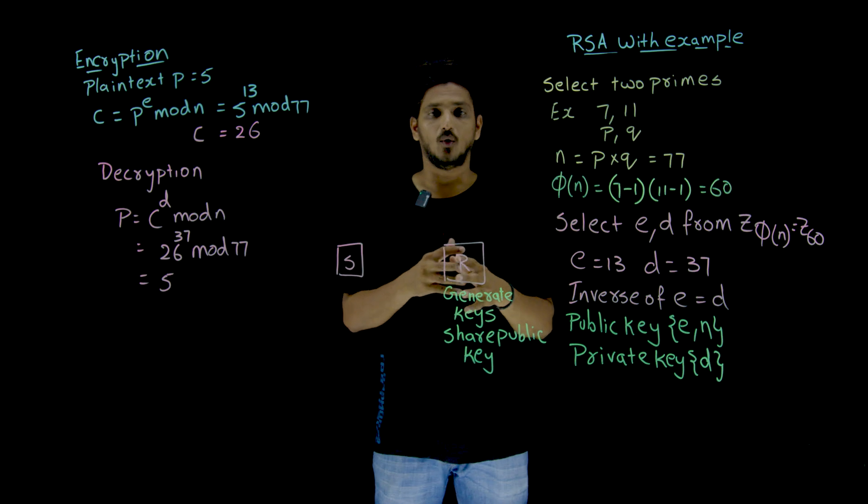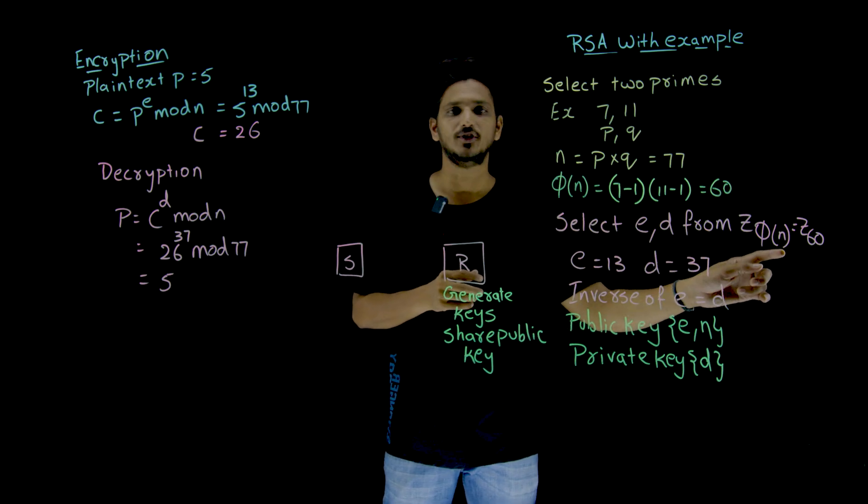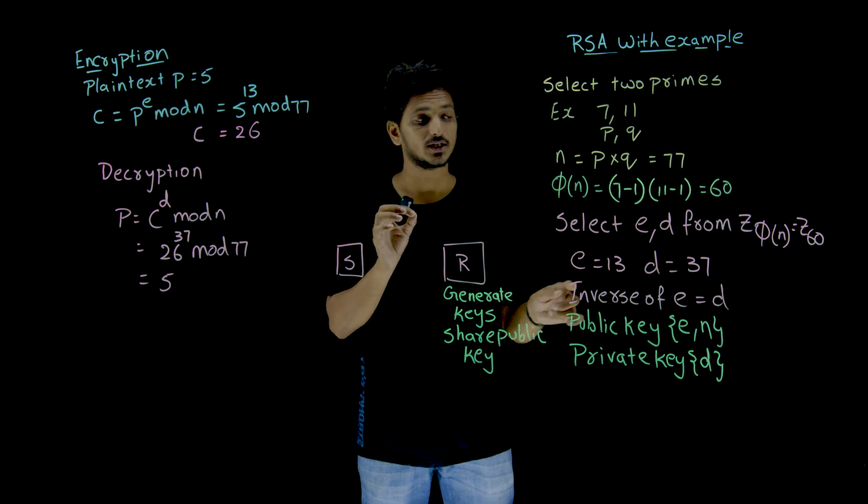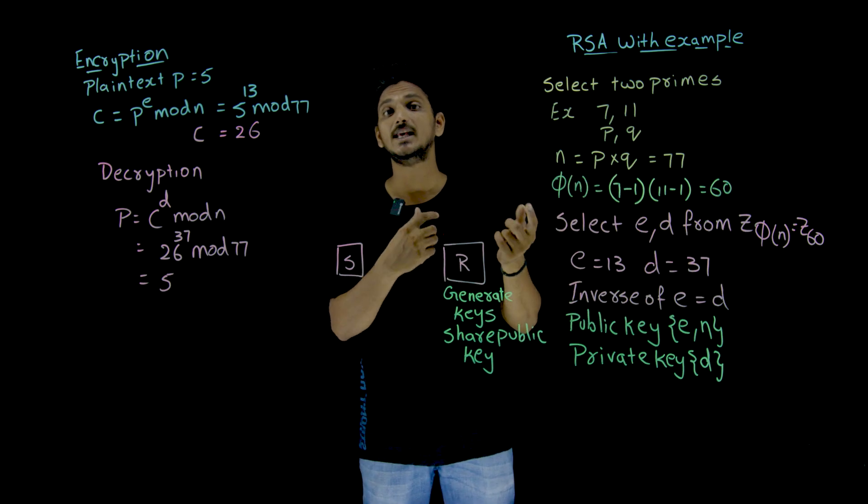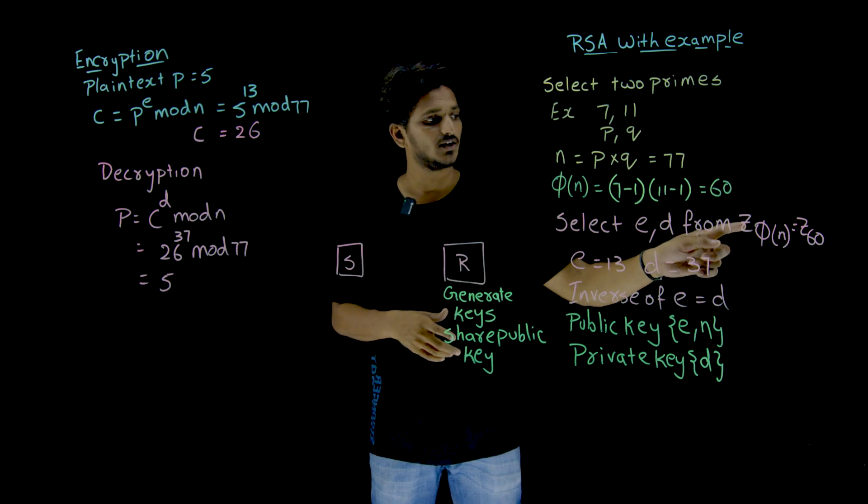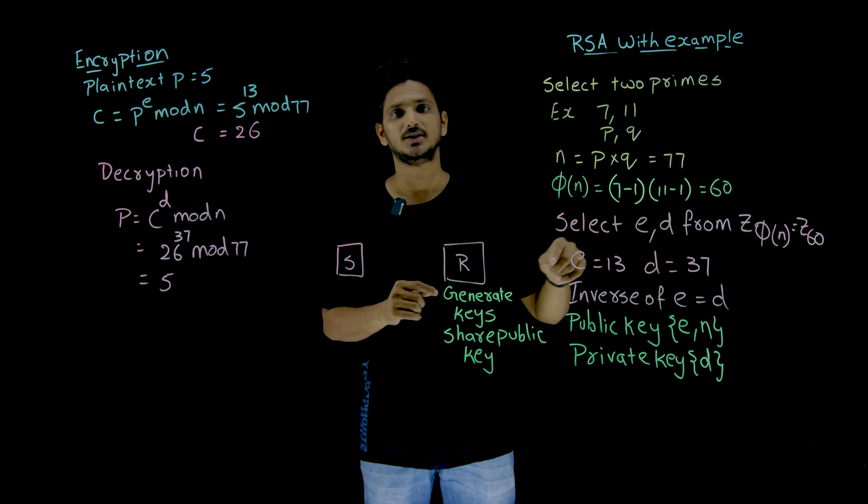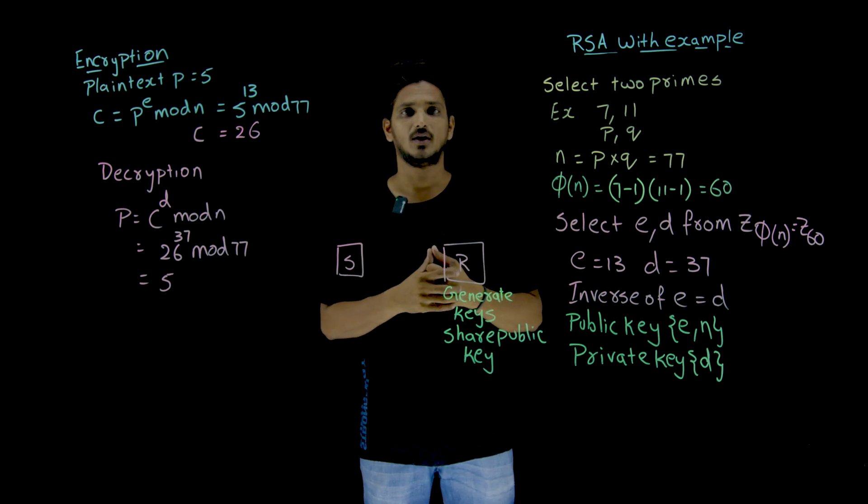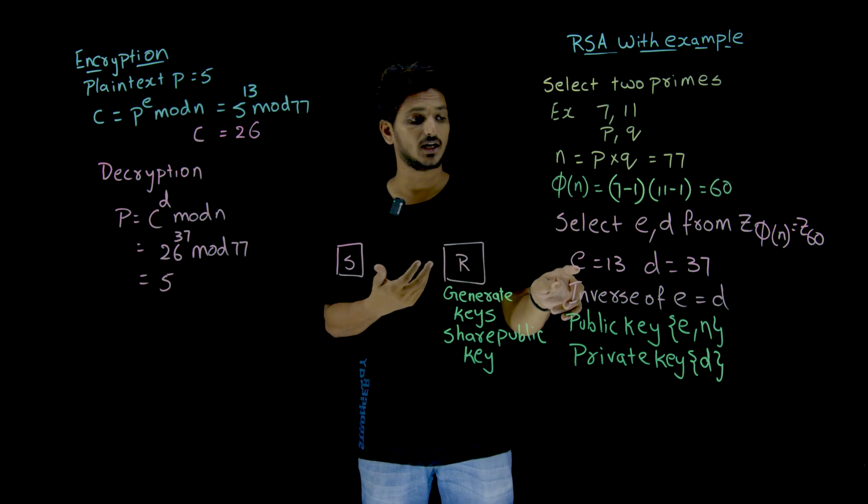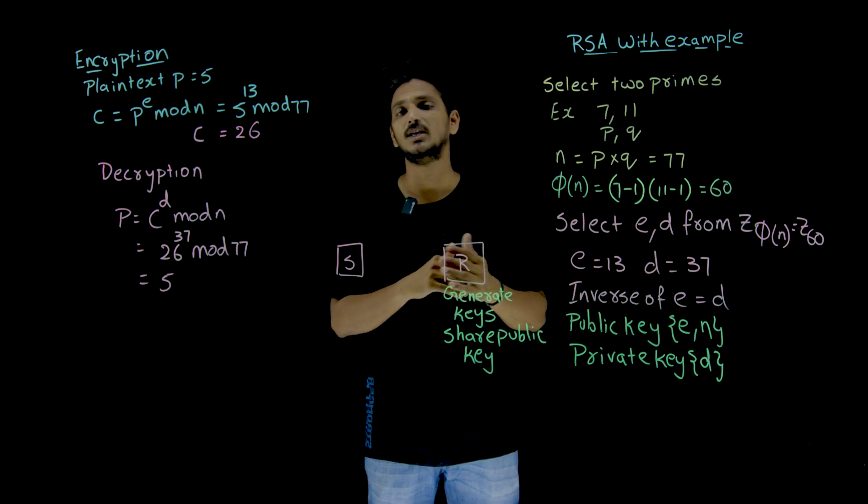Now, we have to select E and D from the set Z_Phi(n). From this set, we are going to select E and D. Z_Phi(n) is equal to Z_60 here. In our example, from Z_60 we need to select E and D. Assume that we select E equal to 13 and D equal to 37. D is the inverse of E.